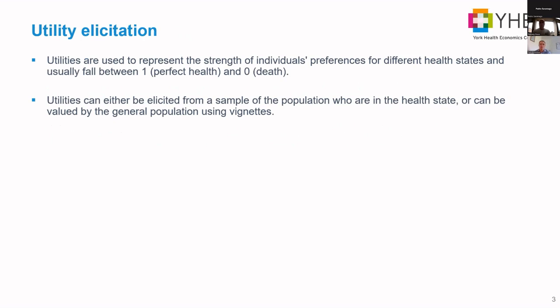The app demonstrates utility elicitation. Utilities represent the strength of people's preferences for different health states — they usually fall between one, which is perfect health with no problems, and zero, which is death. In economic models, utilities represent the health effects of being in different health states. For example, if you've got lung cancer, your utility might be 0.5 — not perfect, not dead yet — and if you die from lung cancer, then you're at zero.